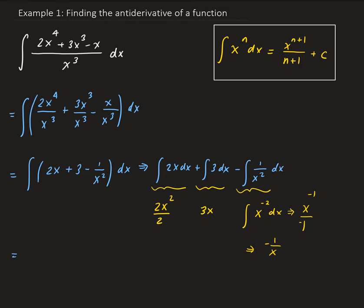So adding these up, we have x squared plus 3x, and then minus a negative 1 over x, which gives us plus 1 over x. And then we can add on our constant of integration.